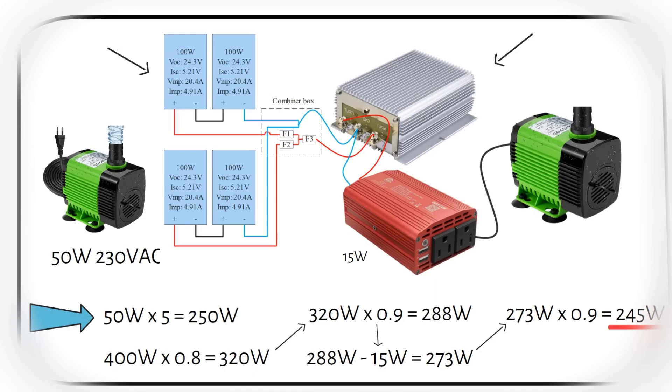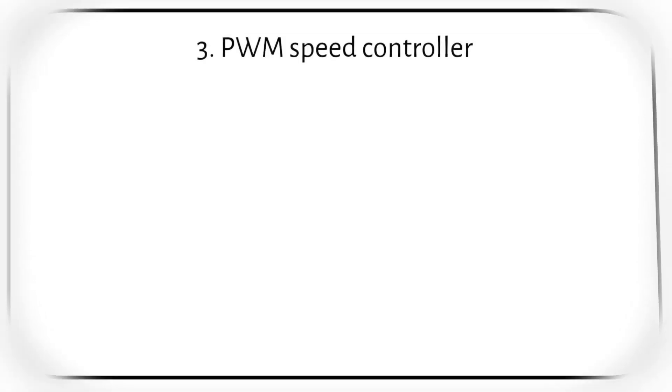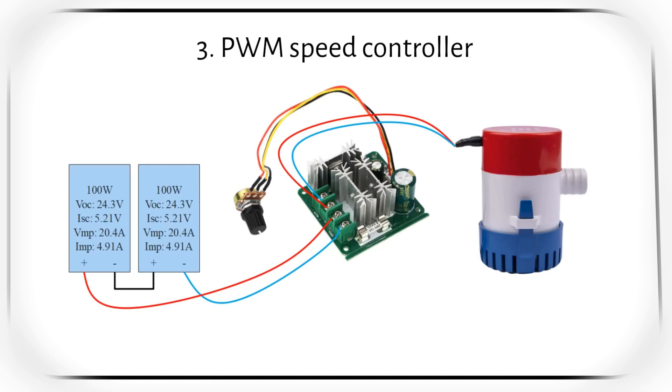A PWM speed controller is just like the buck converter, but the difference is that you can use the tuner knob to regulate the output voltage. This is something the previous buck converter could not do. So if you want to adjust the speed of your DC motor, use the PWM speed controller. Another, but less reliable way of controlling the speed of a DC motor is tilting the solar panel or moving it into the shade.